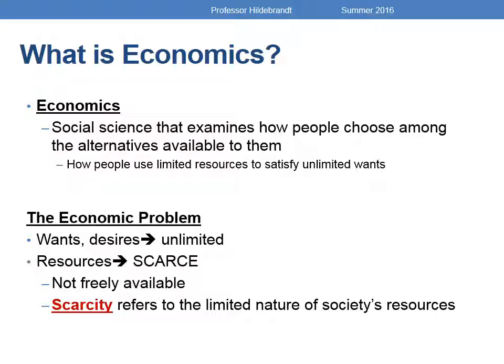When we say that people have unlimited wants, it doesn't necessarily mean you want more of everything. I can certainly think of things I don't want more of, like coconuts — I don't like the way coconuts taste. What it does mean is that everyone wants more of at least one thing. The idea of scarcity shows how limited resources are, and resources are needed to produce the goods and services that people want, so because resources are scarce, goods and services are scarce.